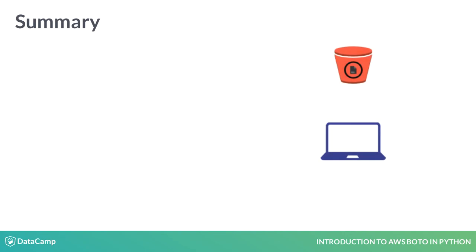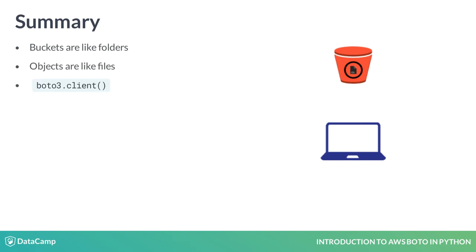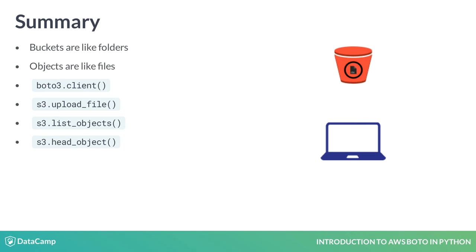In this lesson, we learned that buckets are like folders and objects are like files within them. We learned to create the client before we can do anything else. We learned how to upload files to a bucket, how to list objects in a bucket, how to use head object to get object metadata, how to download a file from a bucket, and finally, how to delete an object.